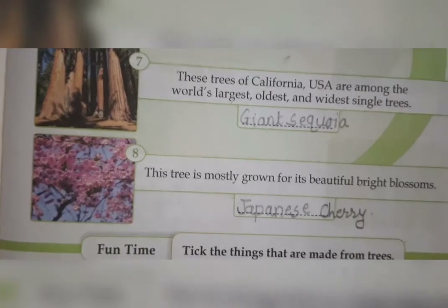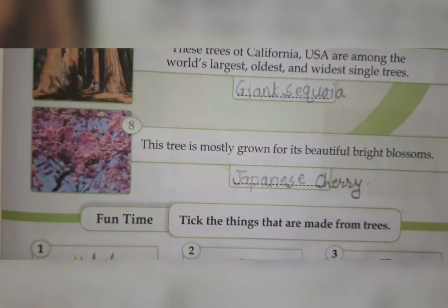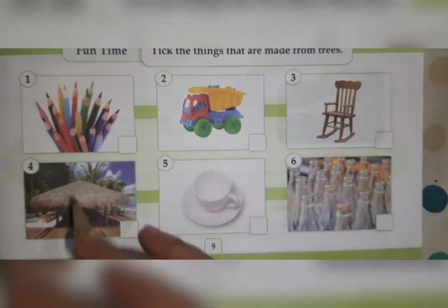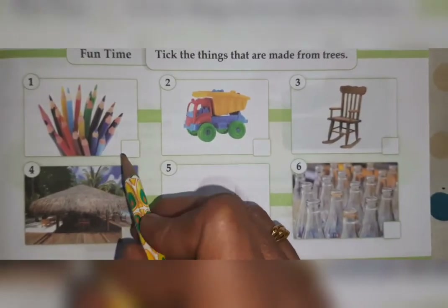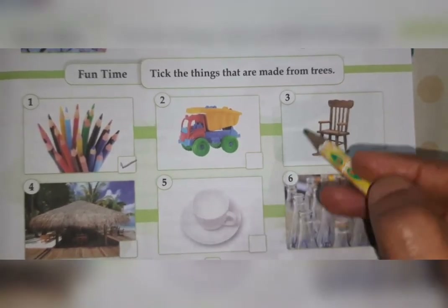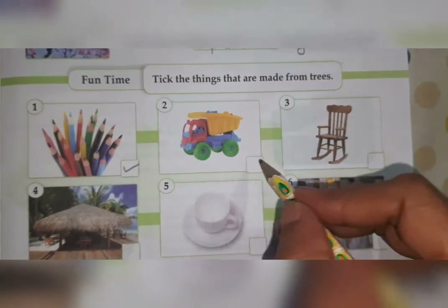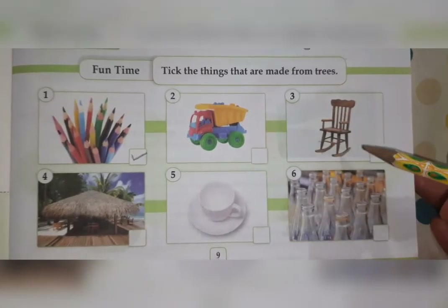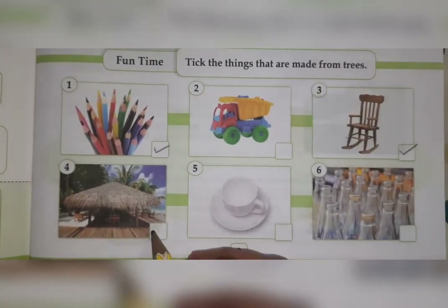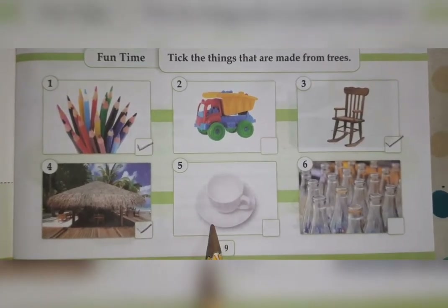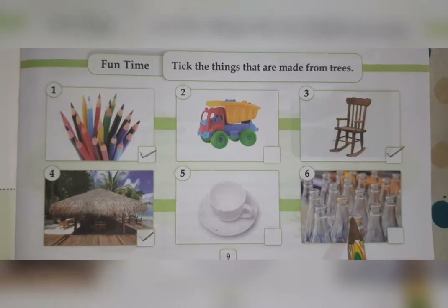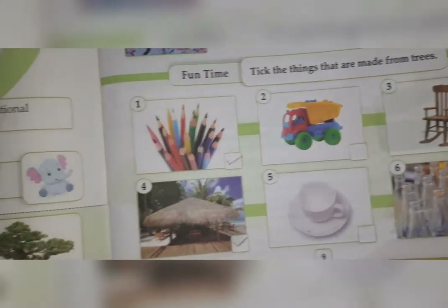We have completed our eight amazing trees. Now fun time — take the things that are made from trees. Pencils are made from wood, so yes. A toy — is it made from a tree? No, leave it. A chair is made from wood, so yes. A hut is also made from a tree, yes. A cup and saucer — is it made from a tree? No. Bottles — no, leave it.